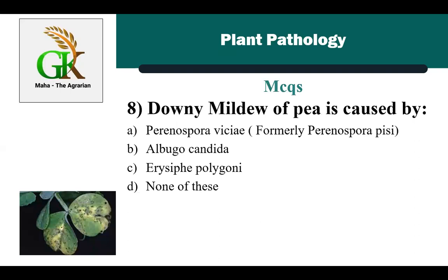The next MCQ is: downy mildew of pea is caused by — the correct answer is A: Peronospora viciae.